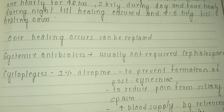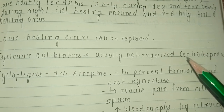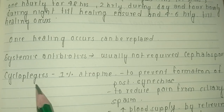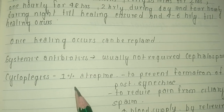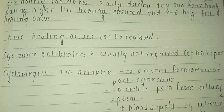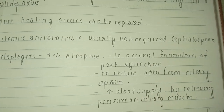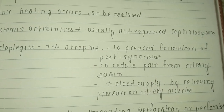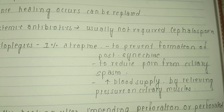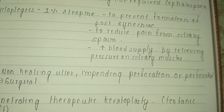Once healing occurs, treatment can be replaced by commercially prepared antibiotics. Systemic antibiotics are usually not required, but if needed, cephalosporins can be used. Cycloplegics — specifically 1% atropine — are used to prevent the formation of posterior synechiae, to reduce pain from ciliary spasm, and to increase uveal blood supply by relieving pressure on the ciliary muscles.